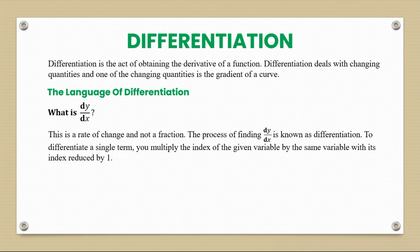To differentiate a single term, you multiply the index of the given variable by the same variable with its index reduced by one. So if y equals x to the power n, then dy/dx equals n times x to the power n minus one. Another way of representing dy/dx is f prime of x, which also denotes a change in x.